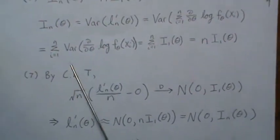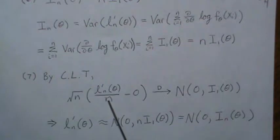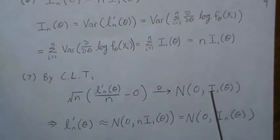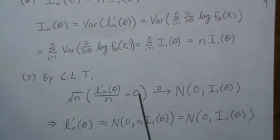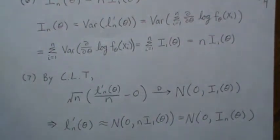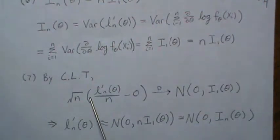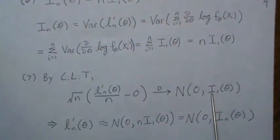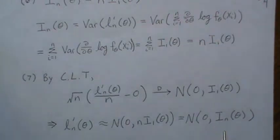Now the big theorem: by the central limit theorem, the score minus its expected value — which is zero — times the square root of N, limits to a normal with mean zero and variance equal to the Fisher information. If we multiply through by the square root of N, the zero drops away, and bringing the square root of N inside requires squaring it — giving us N times the Fisher information of one observation, which is the Fisher information of the full sample. So the score is approximately normal with mean zero and variance equal to the Fisher information.